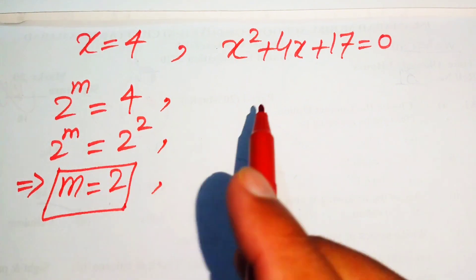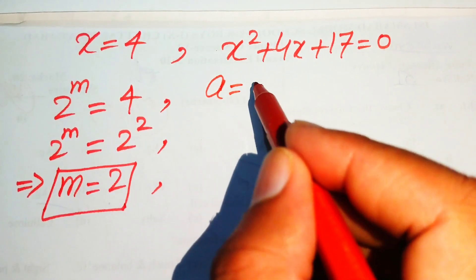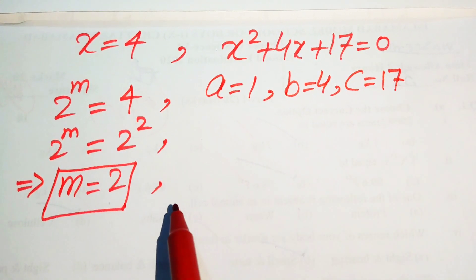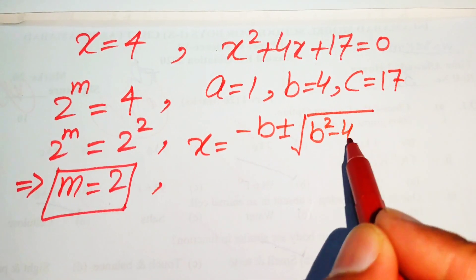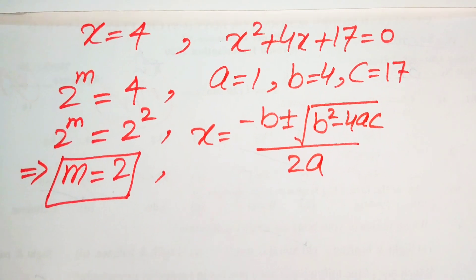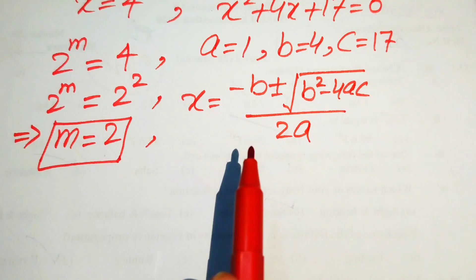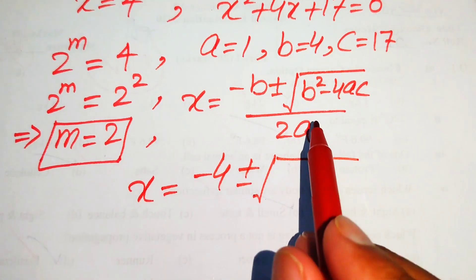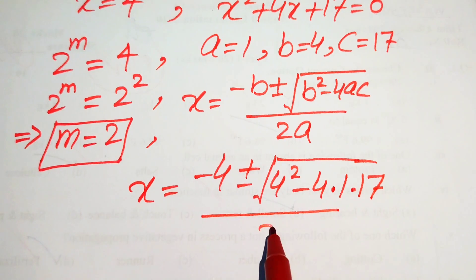To find the other roots we solve the quadratic x squared plus 4x plus 17 equals 0 using the quadratic formula. The coefficients are a equals 1, b equals 4, and c equals 17. The quadratic formula is x equals minus b plus or minus square root of b squared minus 4ac, divided by 2a.